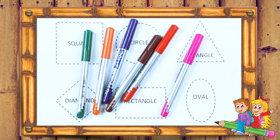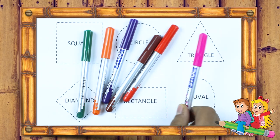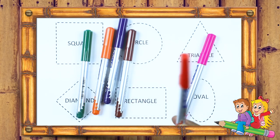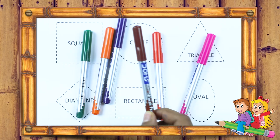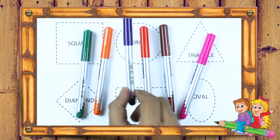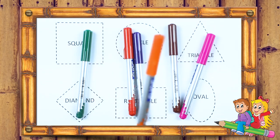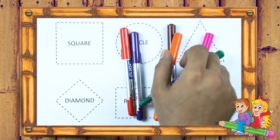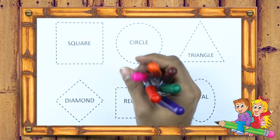We learn shapes with some colors. It's a pink color, red color, brown color, purple color, orange color, green color. So let's start. Learn shapes.